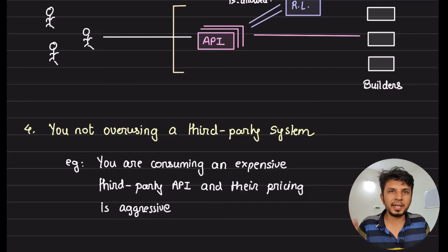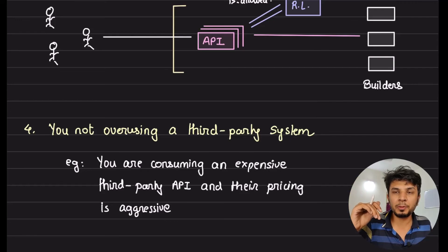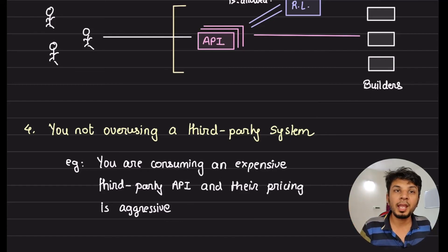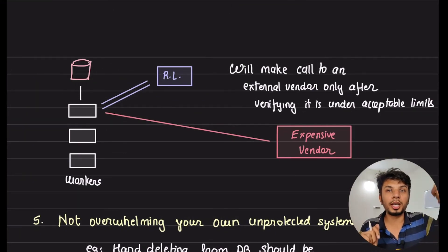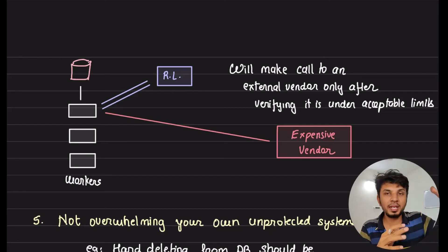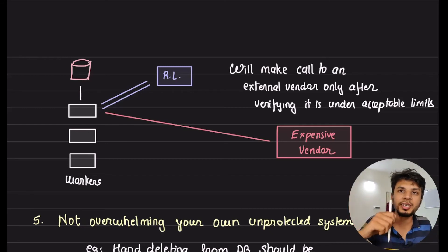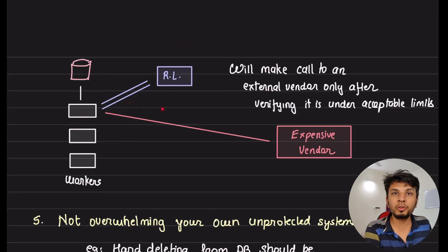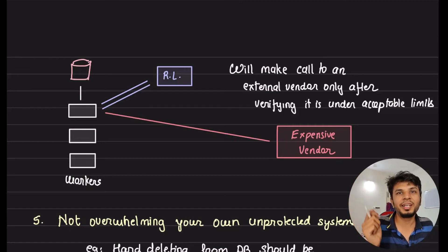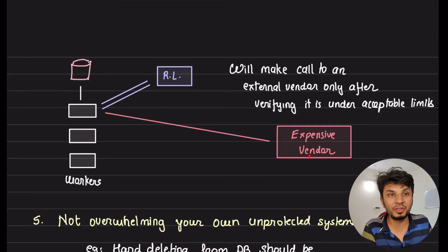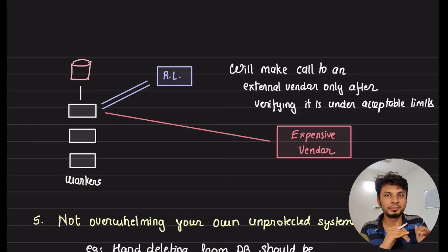The fourth use case is not over-using a third-party system. For example, consuming an expensive third-party API with on-demand pricing, such as a deep learning service that charges $5 per API call. Before making calls to this vendor, your worker instances check with an internal rate limiter to see if they should proceed. Since every call is $5, you need to ensure you are operating within acceptable limits to prevent your infrastructure bill with the vendor from bloating up.